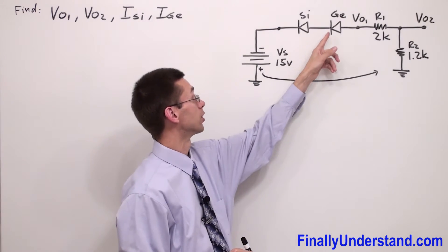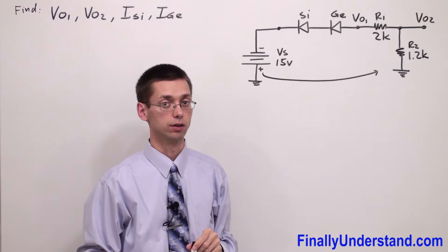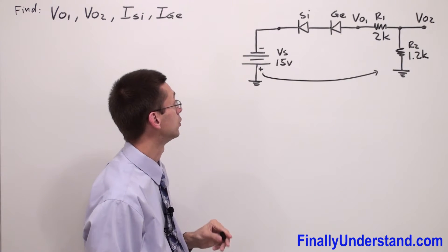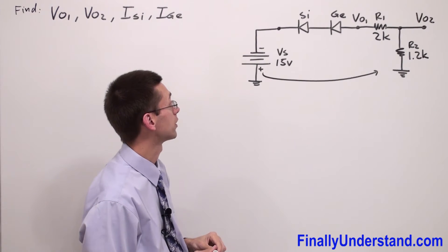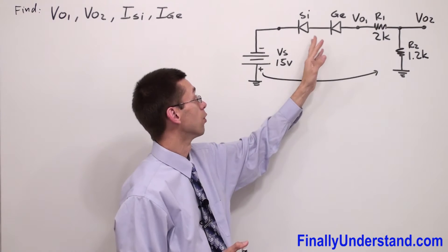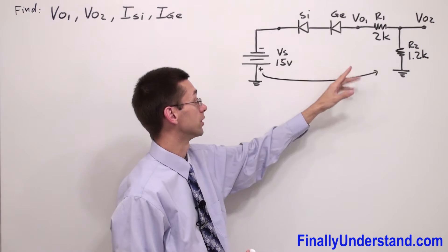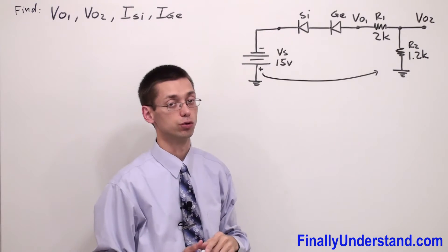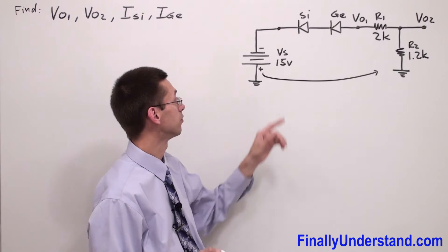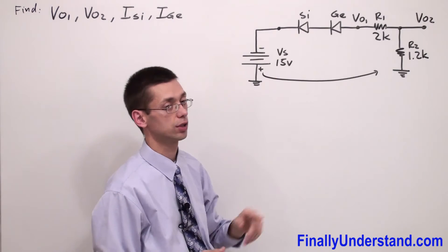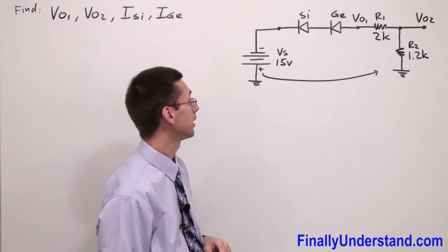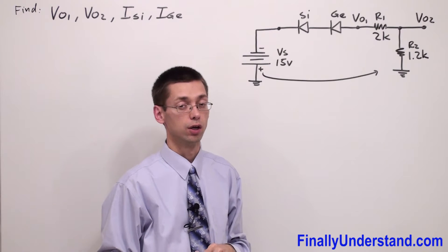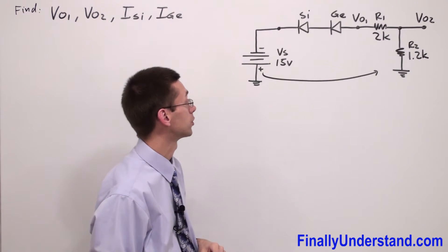I mean the germanium diode and the silicon diode. We can say that these two diodes are going to be forward biased, because the direction of current matches the direction of the two arrowheads and the voltage source is high enough in order to make this circuit functioning.